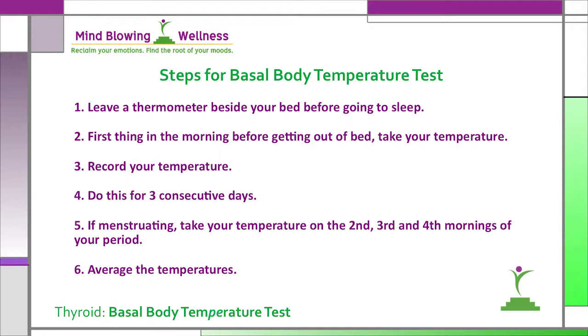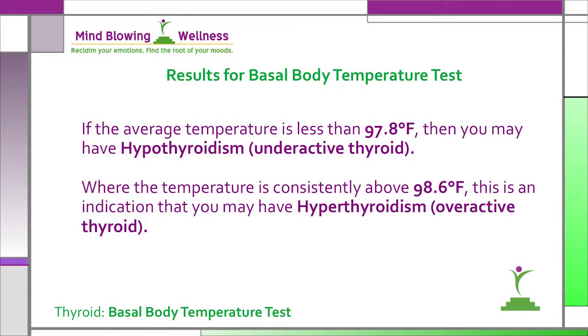Now average the temperatures — add them all up and divide by three. If the average temperature is less than 97.8 degrees Fahrenheit, then you may have hypothyroidism or an underactive thyroid. Where the temperature is consistently above 98.6 degrees Fahrenheit, this is an indication that you may have hyperthyroidism or an overactive thyroid.